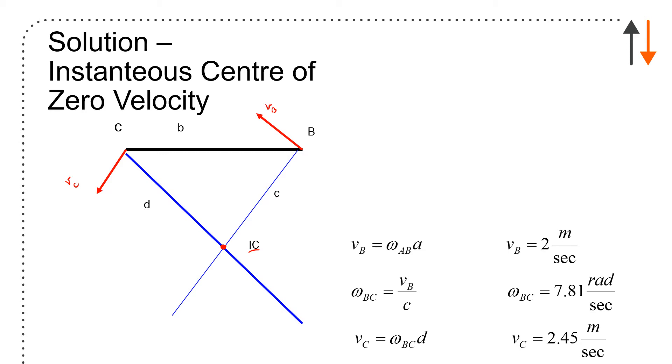Velocity of B, I already know, is omega AB times A, given by just looking at the link AB. But omega BC, which is the angular rotation of that link, is VB divided by C. So VC equals omega BC times D. I get this velocity right here. I get the magnitude of it right away. I know the direction because I know what's happening. Velocity of B is 2 meters per second, omega BC is 7.81 rads per second, and velocity of C is 2.45 meters per second.